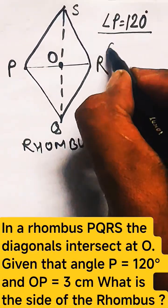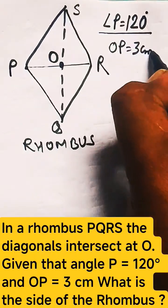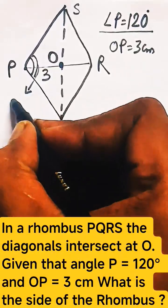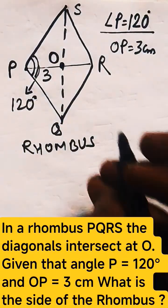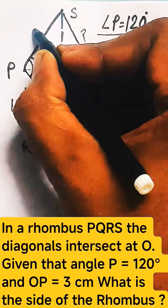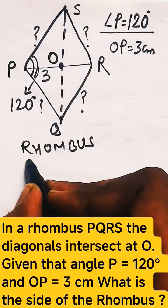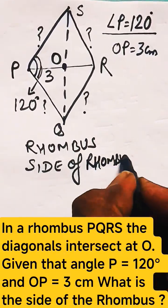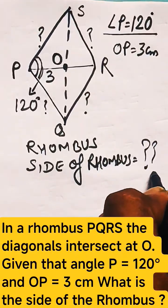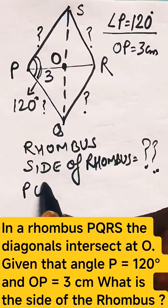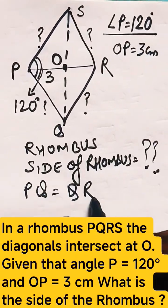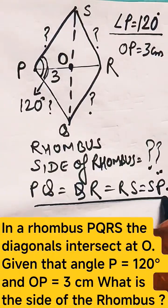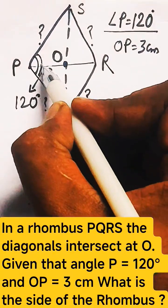We know the property of a rhombus: the diagonals bisect each other equally and at 90 degrees. It is also given that angle P is 120 degrees and OP is 3 centimeters. A rhombus is also a parallelogram, so the opposite angles of a parallelogram are always equal. We need to find the side of this rhombus. All four sides of a rhombus are always equal, meaning PQ = QR = RS = SP.